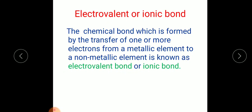First, we'll begin with the electrovalent or ionic bond. According to its definition, it is the chemical bond which is formed by the transfer of one or more electrons from a metallic element to a non-metallic element. The chemical bond formed by the transfer of electrons from one atom to another is known as the electrovalent or ionic bond.